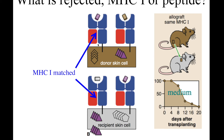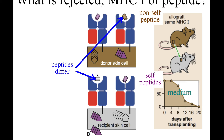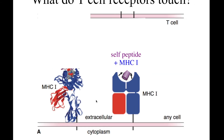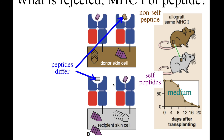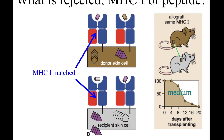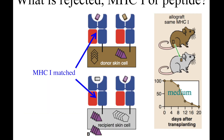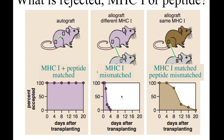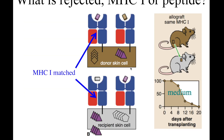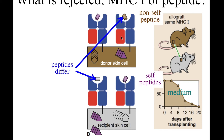They took all possible combinations between donor and recipient: is the MHC the same or not, and are the peptides the same or not? If the MHC is not the same, you get rejected fast. If the peptides are not the same, you get rejected slow.